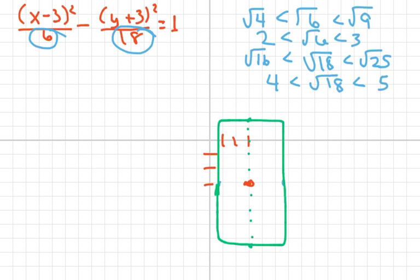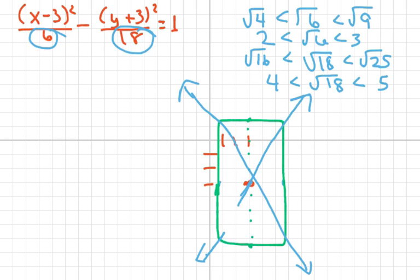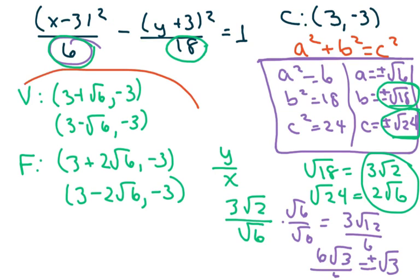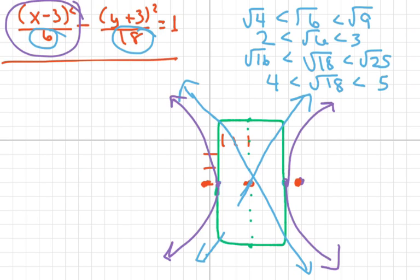I draw the asymptotes from the corners of the box through the center. Since x leads, the hyperbola opens at the vertices — to the right and to the left. The foci lie along the horizontal axis, outside the vertices in this area. We already have all the exact information written down, but when graphing I work straight from the equation.